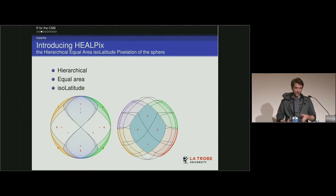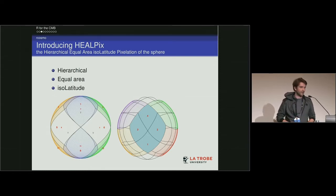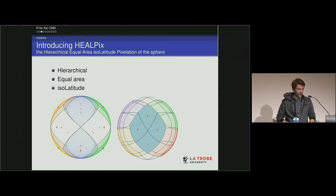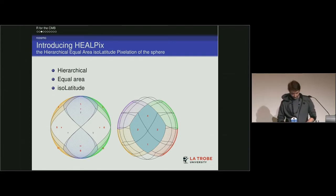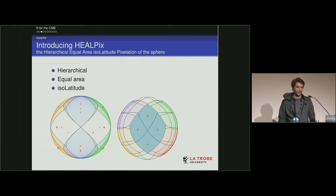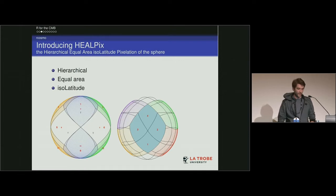You start with 12 base pixels numbered, and then you can divide them into smaller parts. As you continue to refine, all pixels have equal area — that covers 'hierarchical' and 'equal area'. The pixel centers also lie on iso-latitude rings, which is useful when calculating spherical harmonics because the Legendre functions only depend on latitude, so you don't have to evaluate as many of them.